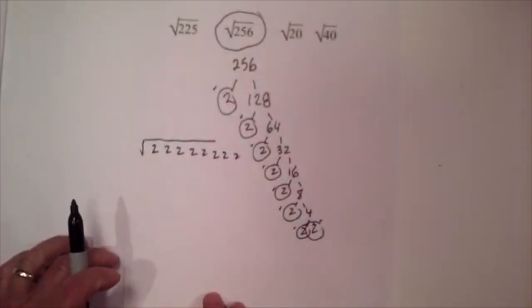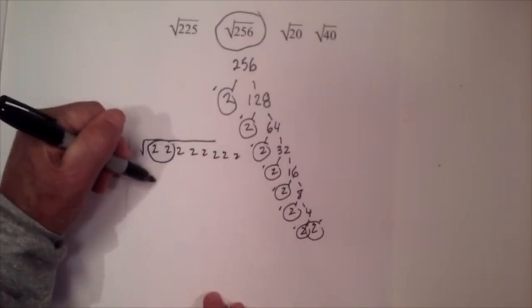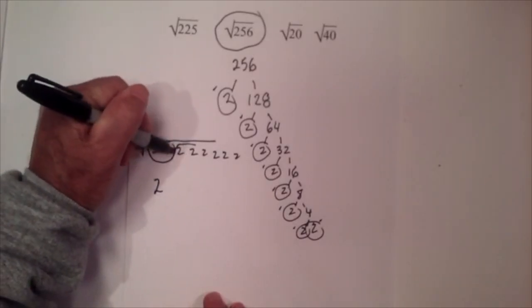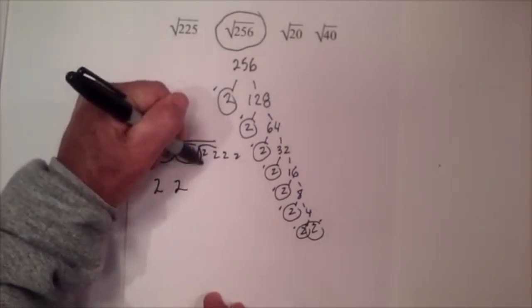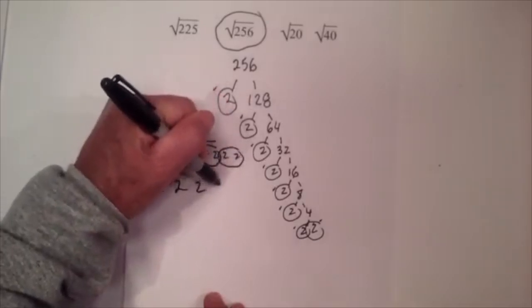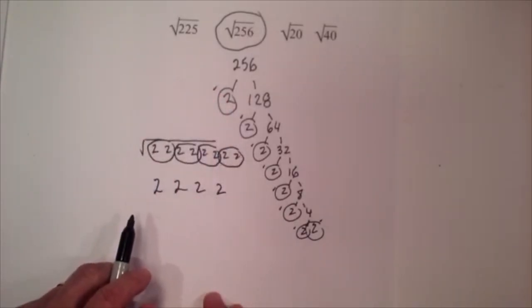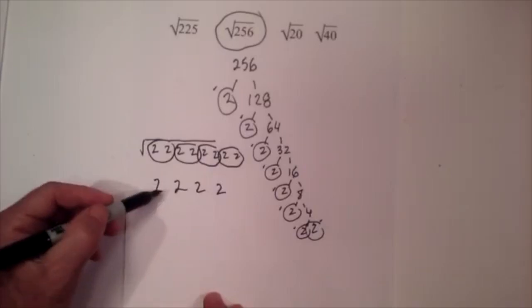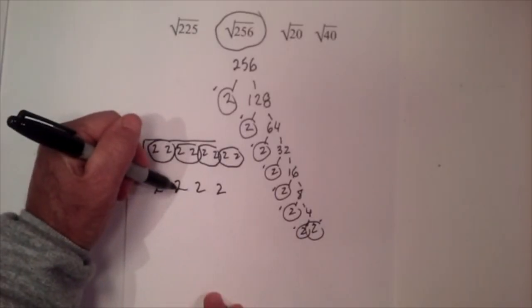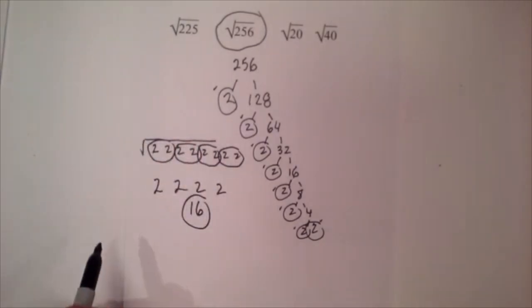Okay, so now as you know the rule with square roots, if you have pairs you can take them out from under. So there's one 2 I can take out and another one, and see this one works out just right where you have four 2's. Then I just multiply these together: 2 times 2 is 4, 4 times 2 is 8, 8 times 2 is 16. So the square root of 256 is 16.